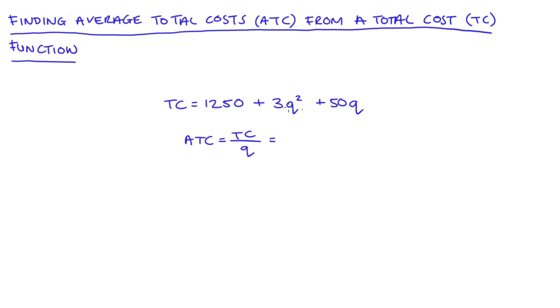So I'm just going to substitute in my values for our total cost into our formula so I get 1250 plus 3q squared plus 50q all divided by q. And actually this reduces to, for our first term, 1250 on q we can't do much with that, but 3q squared divided by q is just 3q and 50q divided by q is 50.